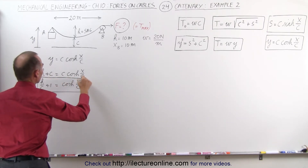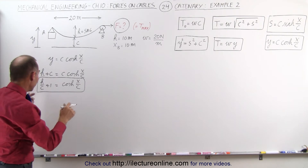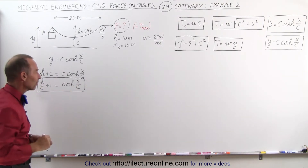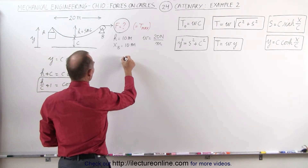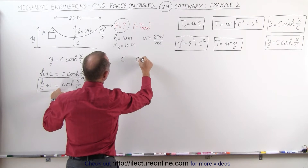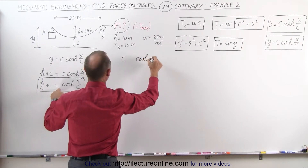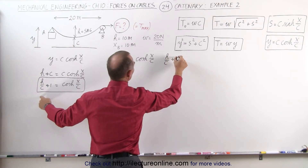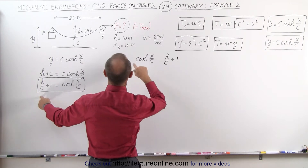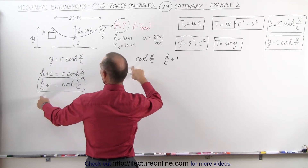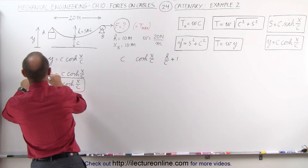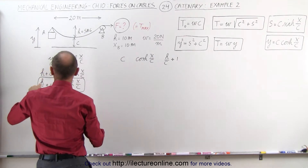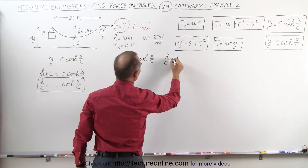We're trying to find the value of c, and we can only do that through an iterative process, just as in the previous video. We'll guess values of c, calculate the hyperbolic cosine of x over c, and compare to h over c plus 1. Note: y is h plus c — not minus — so it should be plus 1 on both sides.